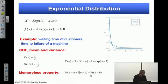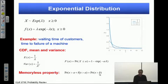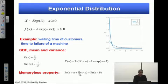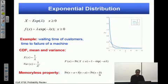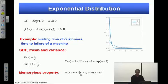It also has a very nice property called the memoryless property. This conditional probability is the same as this unconditional probability. Basically, if you want to find the probability of a machine working after A plus B hours, and we already know that the machine has worked for A hours, it's the same as calculating the probability of X greater than B hours. This is only true for exponential distribution, and one more in discrete would be geometric distribution, which has the same property.